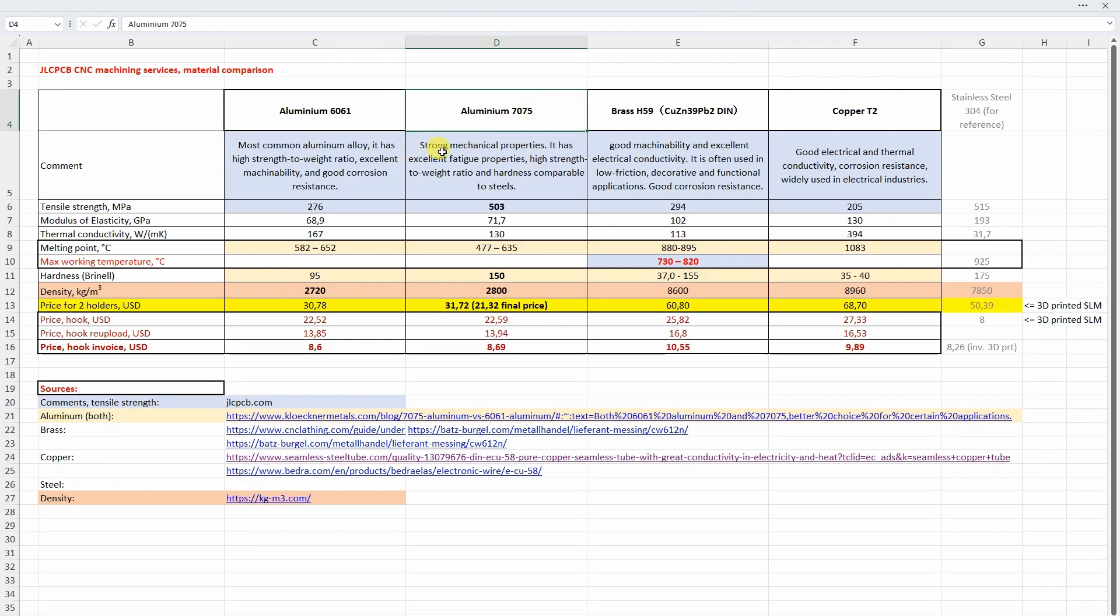7075 aluminum is even stronger, better mechanical properties and excellent fatigue properties and look at this tensile strength. It is almost like stainless steel and also the hardness is very similar. Actually this was my choice for those holders.